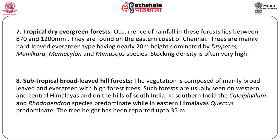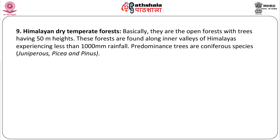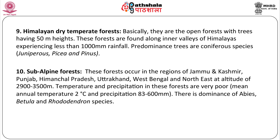Next is the subtropical broadleaved hill forest. The vegetation is composed of mainly broadleaved and evergreen high forest trees. Such forests are usually seen on western and central Himalayas and on the hills of south India. Himalayan dry temperate forests: basically they are open forests with trees having 50 meter heights. These forests are found along inner valleys of Himalayas experiencing less than 1000 millimeters of rainfall. The predominant trees are coniferous species. Subalpine forests occur in the regions of Jammu and Kashmir, Punjab, Himachal Pradesh, Uttarakhand, West Bengal and North East, at altitudes of 2900 to 3500 meters.